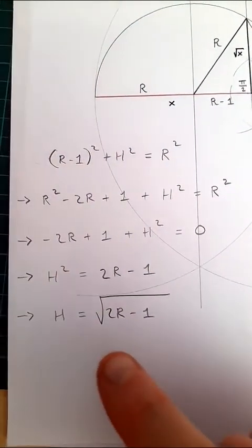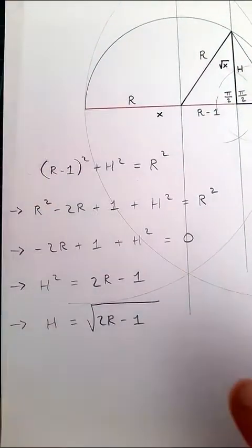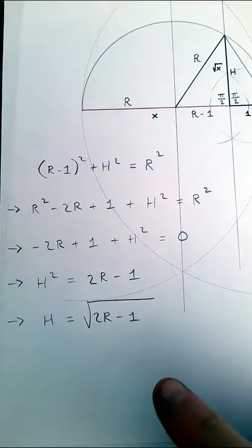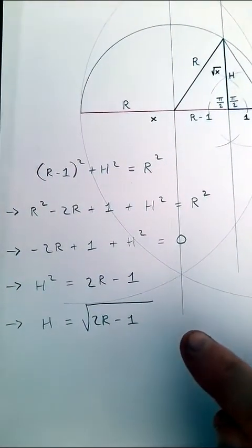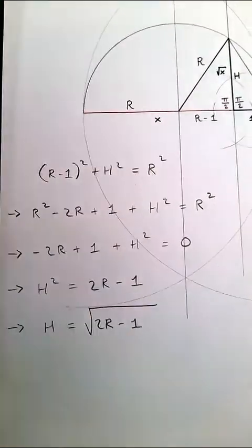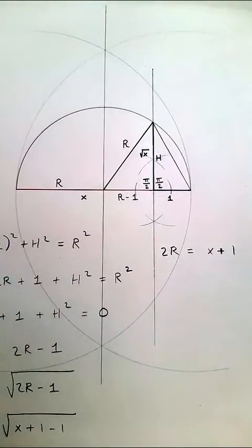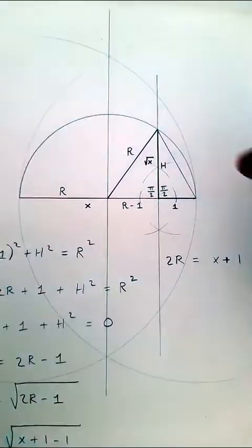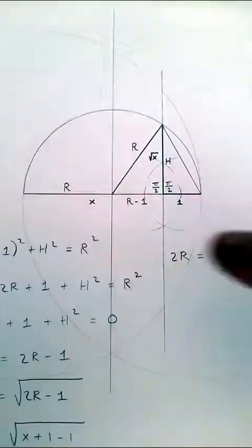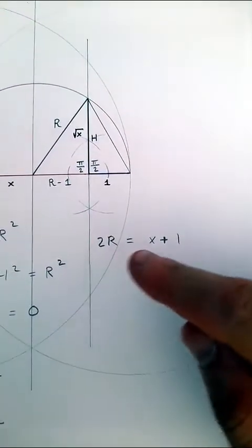That means that h is the square root of 2r minus 1. Now I'm going to show you why the square root of 2r minus 1 should give us the square root of x. As we're dealing with a semicircle, 2r, which is two radiuses, is going to be equal to the length x plus 1. So 2r is x plus 1.